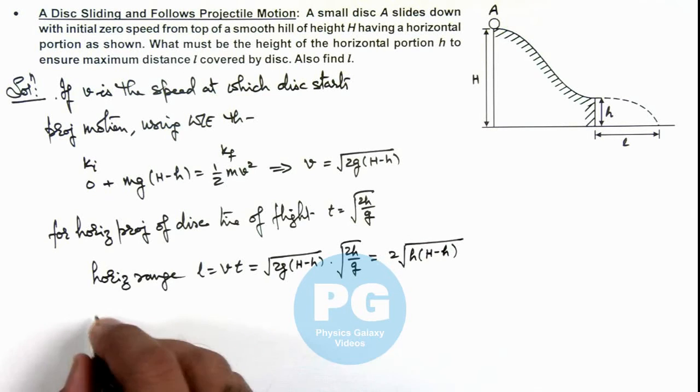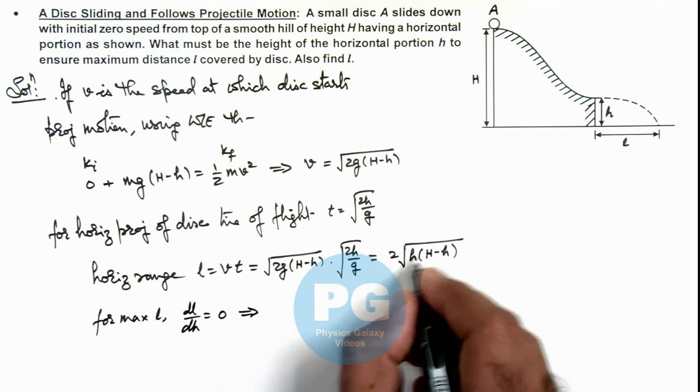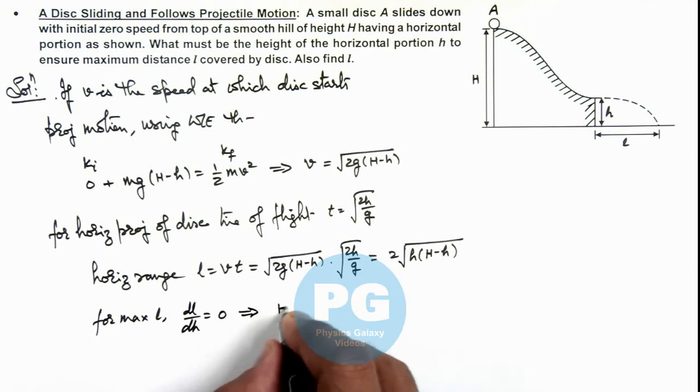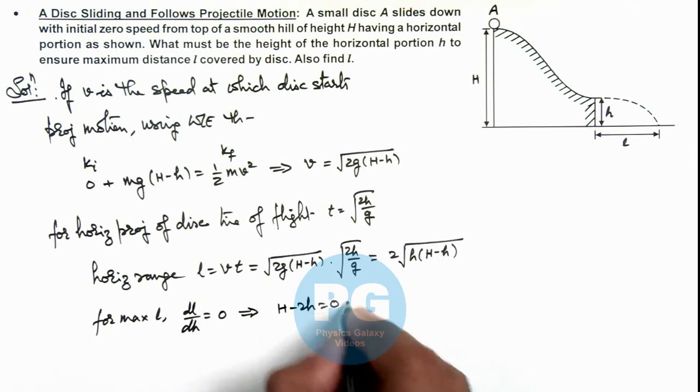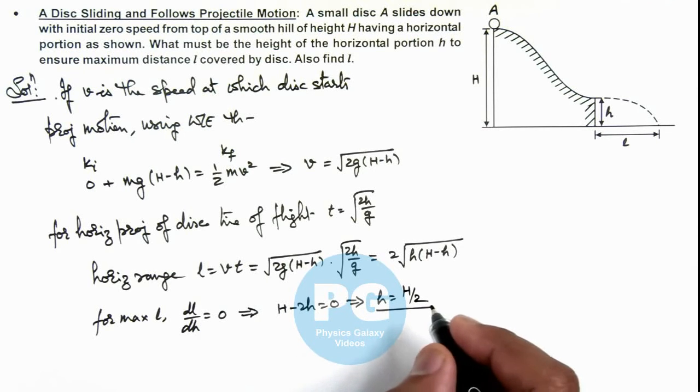And we can also write for maximum L here, we should have dL by dh should be equal to zero. So if we differentiate this, this will give us H minus 2h is zero, or at h is equal to capital H by 2, range will be maximum.